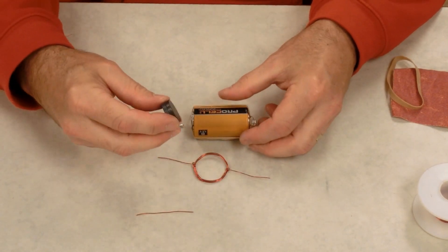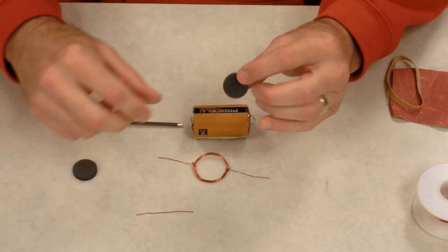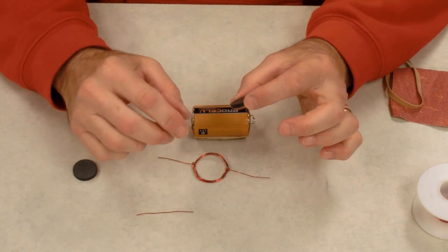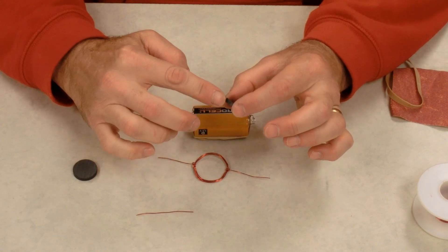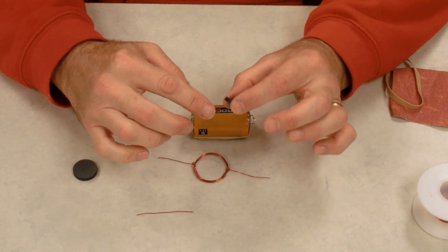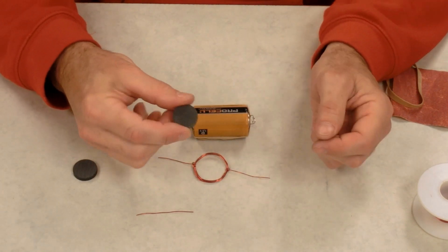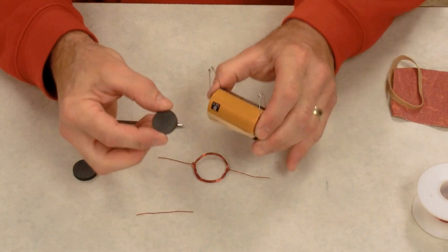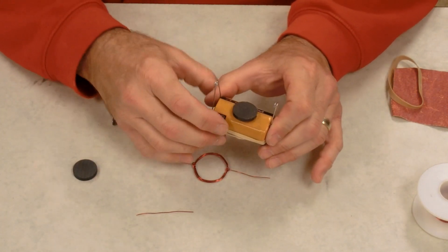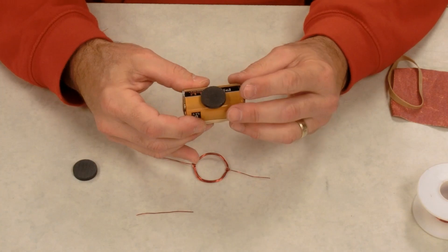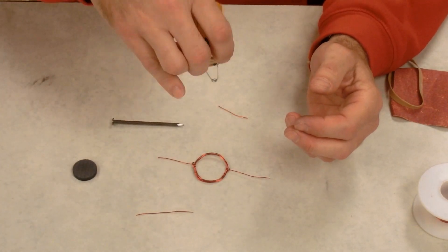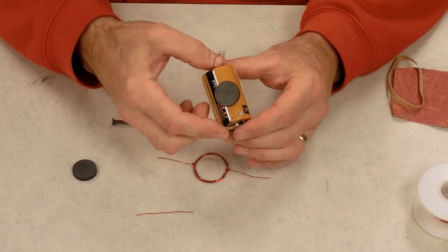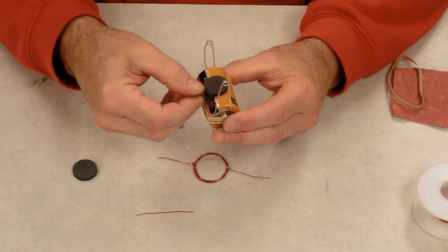Now our ceramic disc magnet, I buy these at Lowe's. The six pack used to cost $1.99. I think they went up to about three dollars for a six pack, so they're about 50 cents a piece, and we're just going to place that on the dry cell. Now because it's a magnet, it stays on. You don't have to worry about needing to glue it or anything like that.